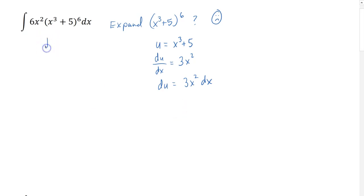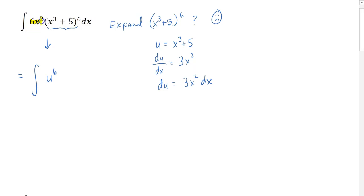Now we go back to our integral and rewrite it in terms of our new variable. First, x cubed plus 5 to the sixth power becomes u to the sixth power. Next, I have 6x squared dx in my integrand, which is related to 3x squared dx — in fact, it's just twice that. So if I multiply du by 2, that gives me precisely 6x squared dx, and I can replace 6x squared dx with 2 times du.